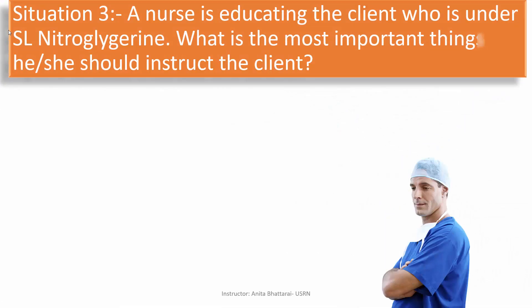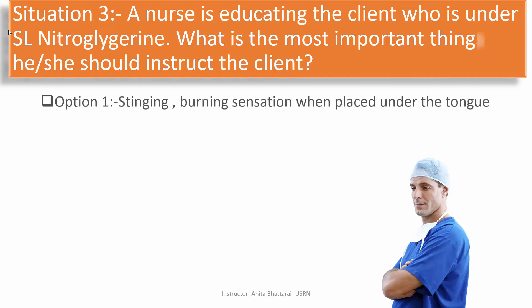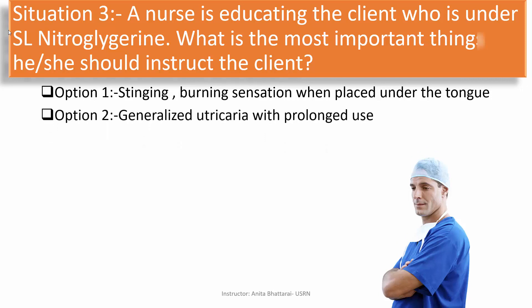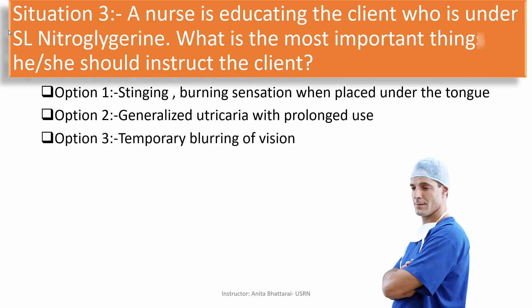Situation three: A nurse is educating a client who is using sublingual nitroglycerin. What is the most important thing the nurse should instruct the client? Option 1: stinging and burning sensation when placed under the tongue. Option 2: generalized urticaria with prolonged use. Option 3: temporary blurring of vision. Option 4: increase in tiredness.